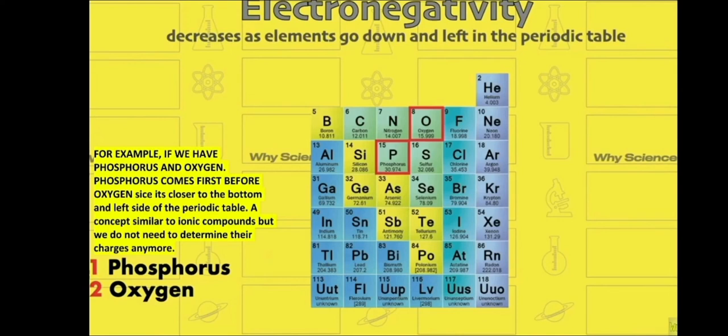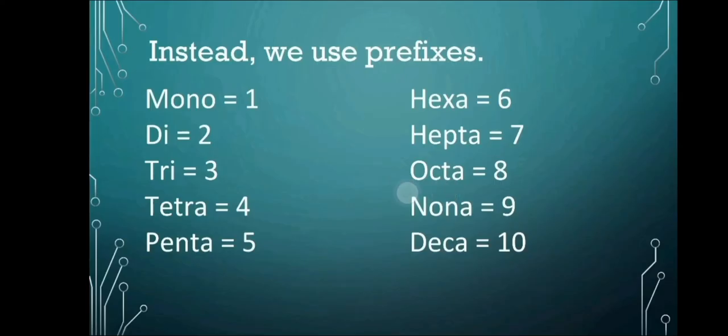And instead, we put prefixes before elements. Here are the prefixes we will be using. Mono if we have 1, di if we have 2, tri if we have 3, tetra if we have 4, penta if we have 5, hexa if we have 6, hepta if we have 7, octa if we have 8, nona if we have 9, and of course deka if we have 10.